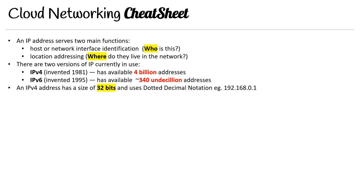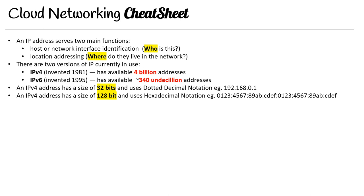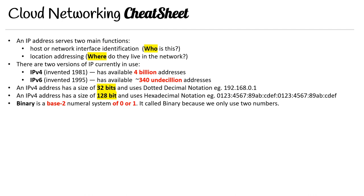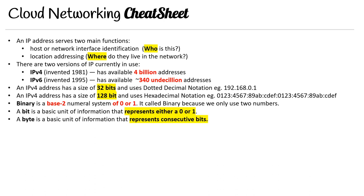IPv4 addresses have 32 bits and use dot-decimal notation — you've definitely seen an IP address before, like 192.168.0.1. IPv6 is 128-bit and uses hexadecimal notation. Now let's talk about binary. Binary is a base-two numeral system — it's either zero or one. A bit is a basic unit of information representing either a zero or one. A byte is a basic unit of information representing consecutive bits. The most common type is eight consecutive bits, known as an octet, and octets are what we use when building IP addresses.